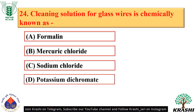Question number 24. Cleaning solution for glassware is chemically known as potassium dichromate — option D. It has strong oxidizing ability and has little erosion effect on glass instruments.